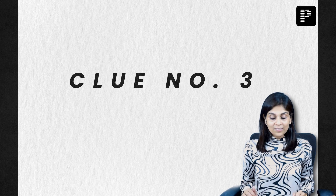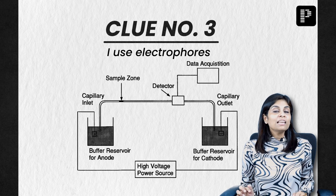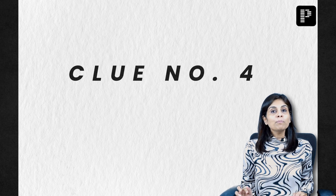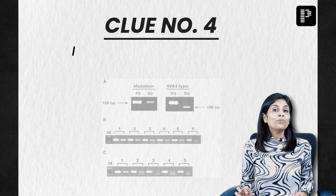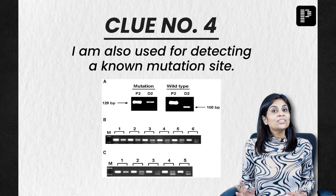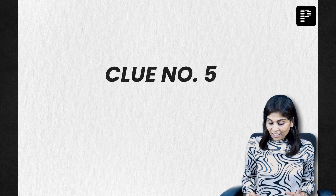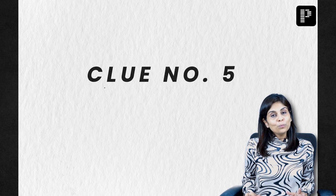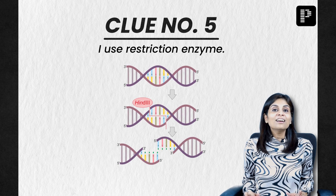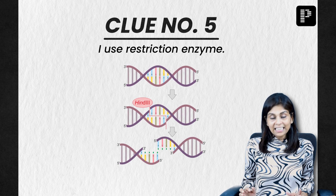Clue number three is: I use electrophoresis. Clue number four: I'm also used for detecting a known mutation site. The last clue is: I use restriction enzyme.